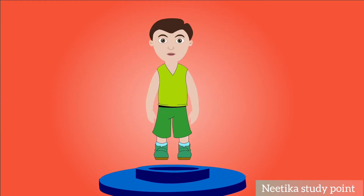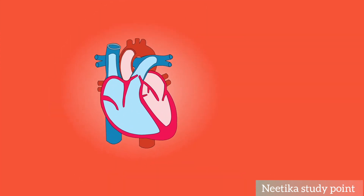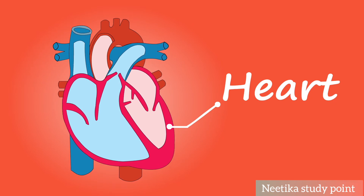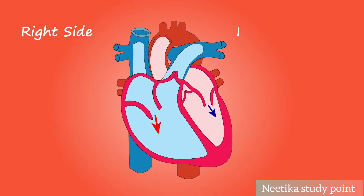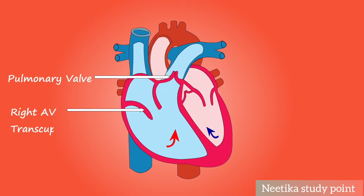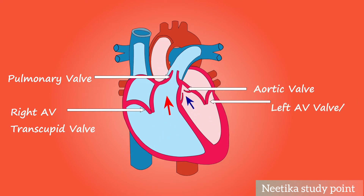Welcome to Neetika's Study Point. Card: right side, left side. Pulmonary valve, right AV — tricuspid valve. Aortic valve, left AV valve — bicuspid valve.